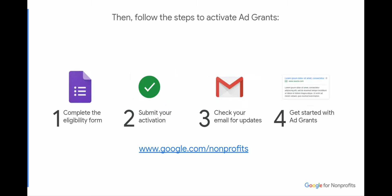Once you have your Google for Nonprofits account, you can navigate to the Ad Grants card, click through to complete the eligibility form, and submit your activation. Once our team performs a quick review, you can get up and running with Ad Grants. Let's walk through the process.